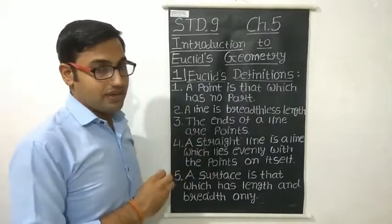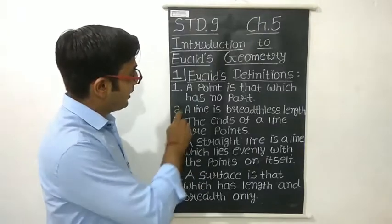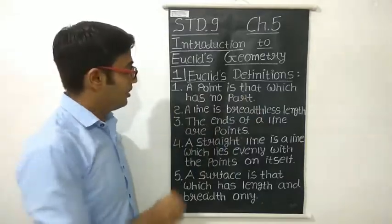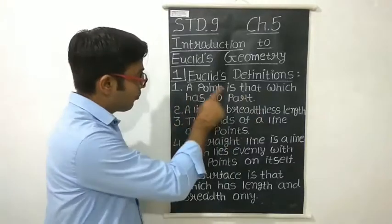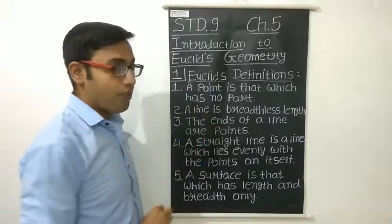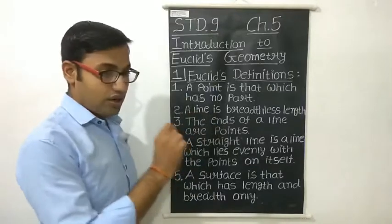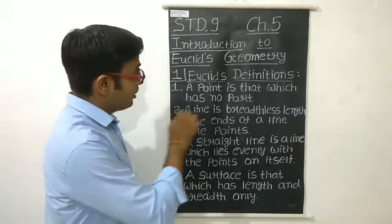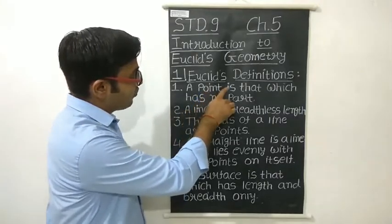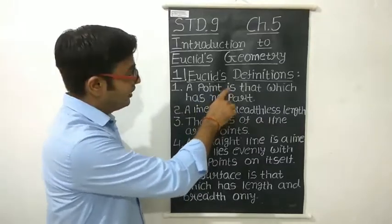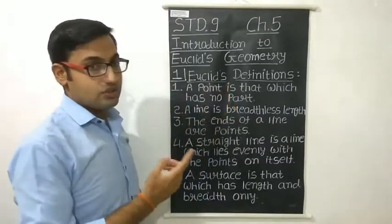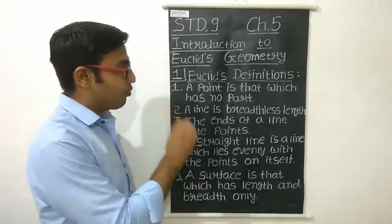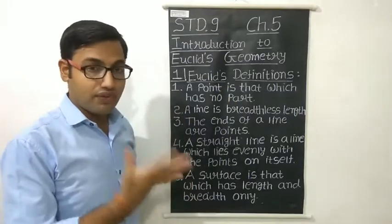The first definition: a point is that which has no part. The definition of a point means that a dot, a point, has no dimension. It has no length, no breadth, no height — nothing. So we can say that a point is a zero-dimension figure.